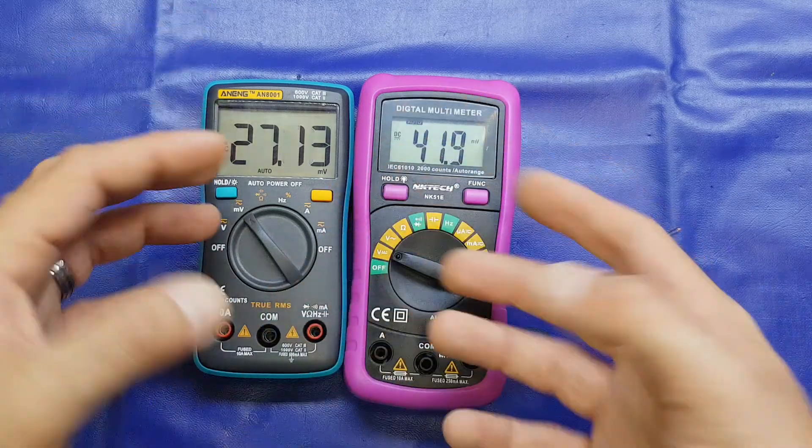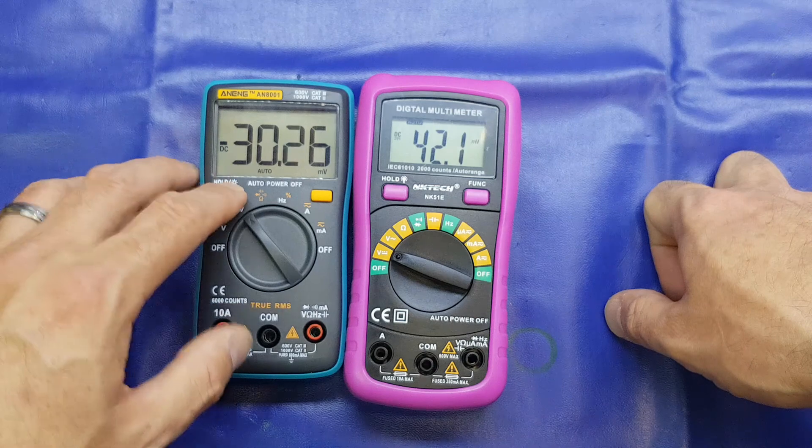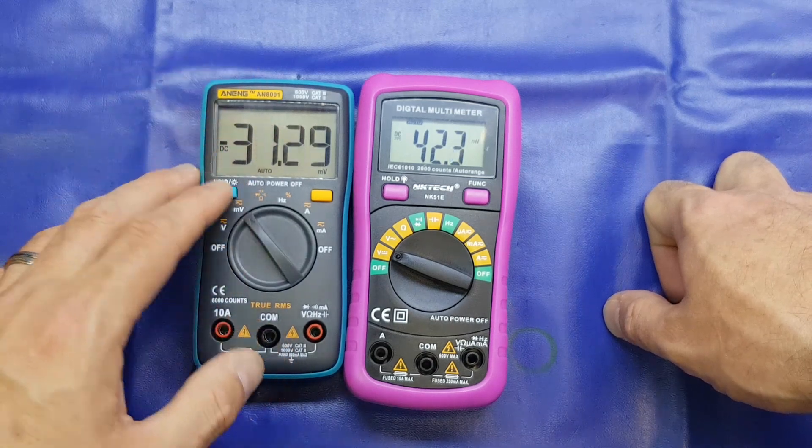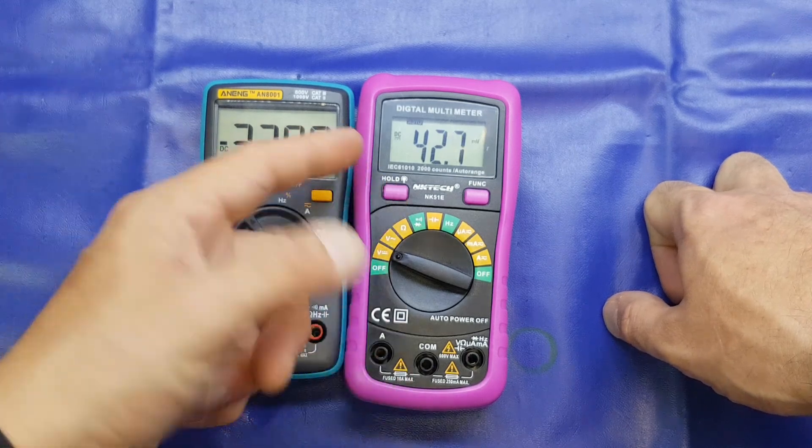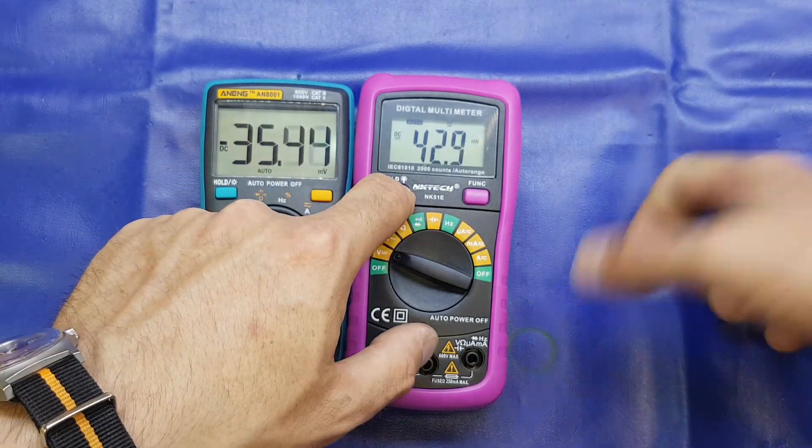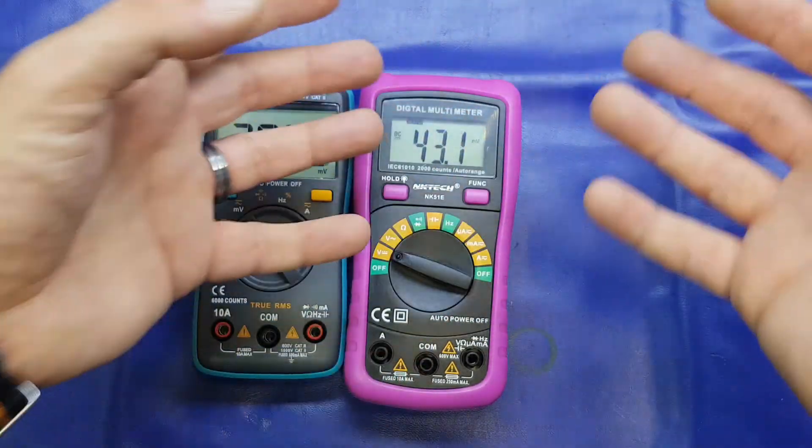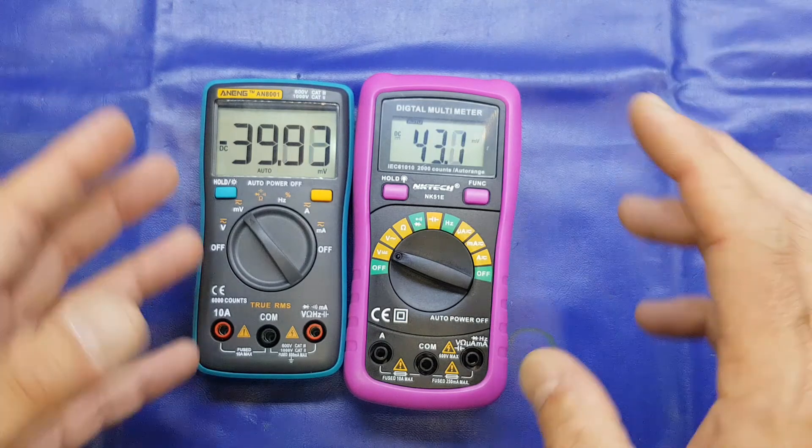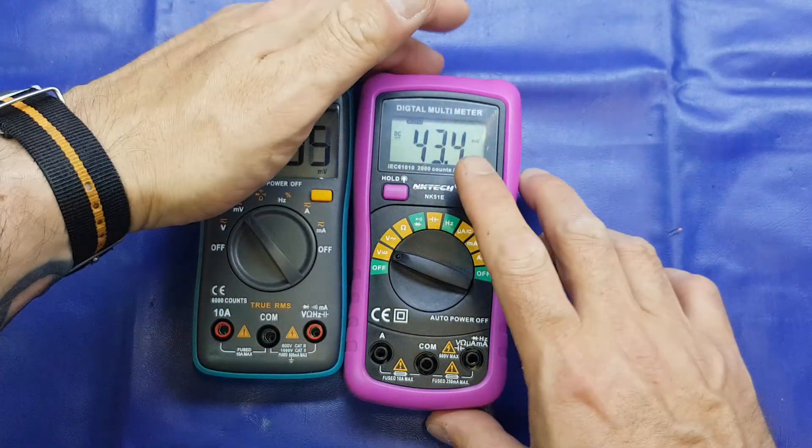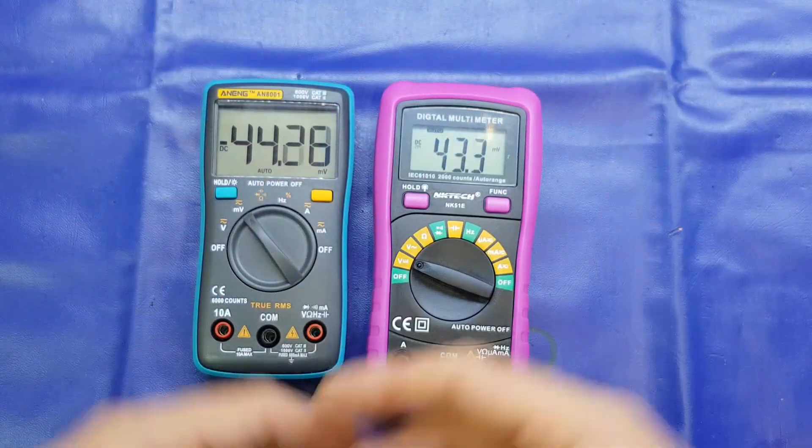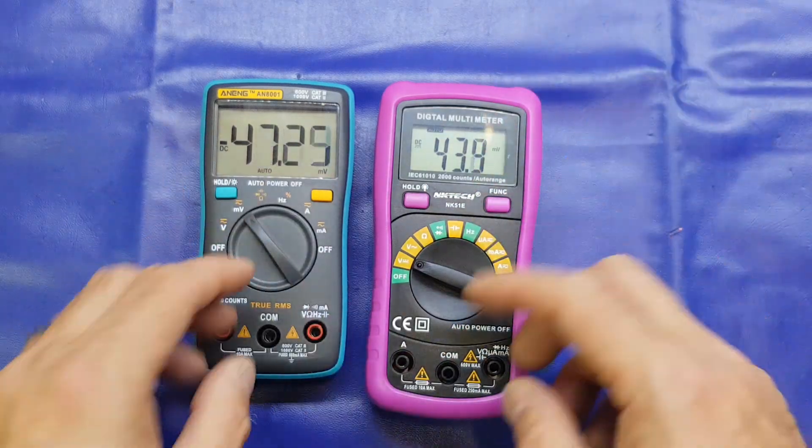This has been programmed so that a single push holds it, and a long hold turns on the backlight. This one does both. Press and hold it, hold comes on automatically and then the backlight. Press and hold it again, hold comes off and the backlight comes off. Really a really simple oversight by the designer of the programming for this, in my opinion. But overall, not too bad a meter for the money.